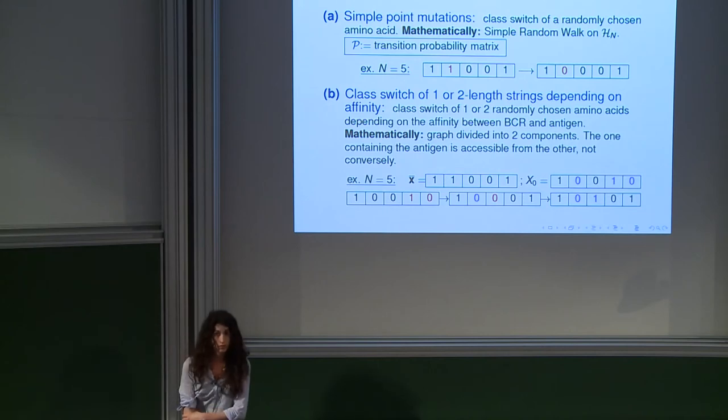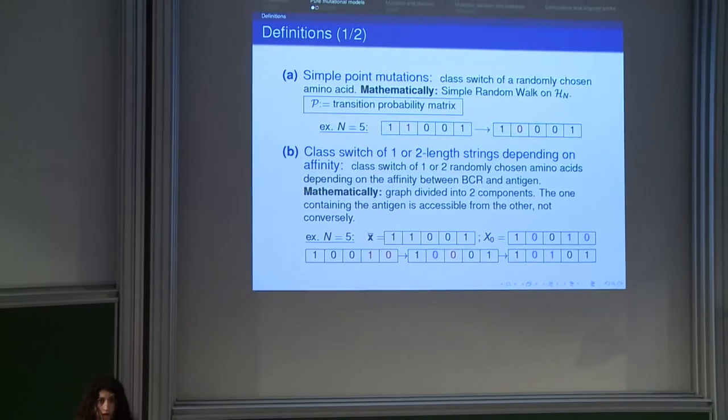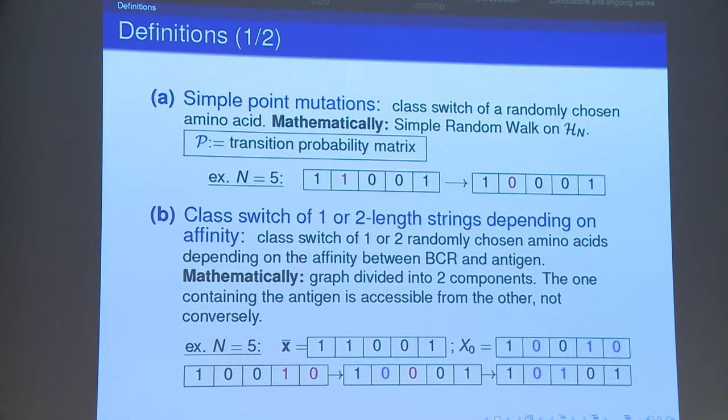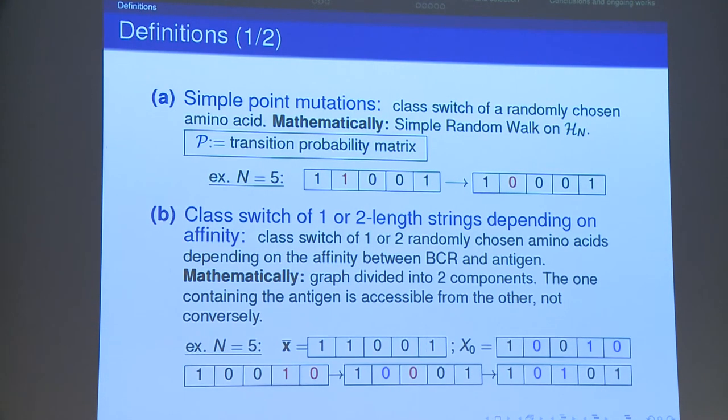Well I start with pure mutational models. We can of course define very different mutational rules. In particular we define the rule of simple point mutations in which at each time step a randomly chosen amino acid switches the class it belongs to. Mathematically this gives rise to a simple random walk on the n-dimensional hypercube. Of course this kind of random walk has been already studied in many different contexts. But here it represents for us the basic mutational model and we will use it to define more complex mutational rules. And I give the notation of the transition probability matrix which is P and we will use it later also.